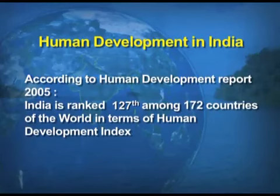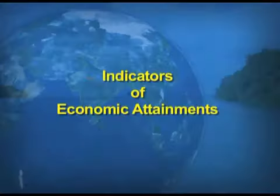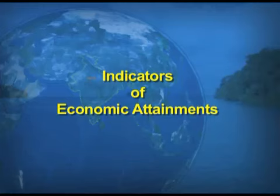According to the human development report 2005, India is ranked 127th among 172 countries of the world in terms of the human development index. Now we look at the indicators of economic attainment, because in the previous part we dealt with the growth of people being concerned with income, the way they spend income and the way they earn income.